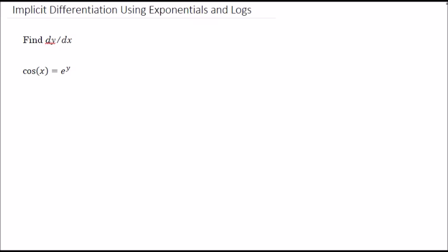This is going to be an example of implicit differentiation and there are actually two different ways to do this problem. This is a problem I came across working with one of our students here. The question is find dy/dx and the problem is cosine of x equals e to the y. We're gonna do this problem two different ways, so I'm actually gonna go ahead and copy this over.